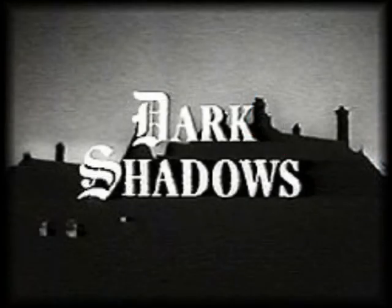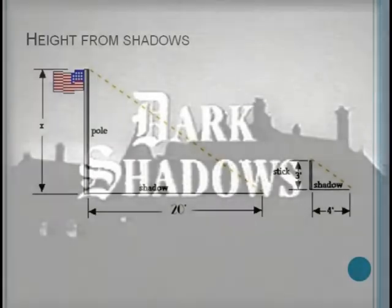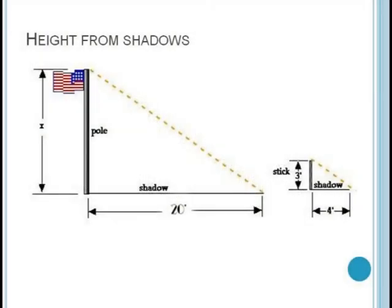Our final example is the ubiquitous shadow problem. In this case we wish to find the height of a flagpole. If we have a yardstick that's three feet tall, and it casts a shadow four feet long, then we have made a small triangle, which is similar to the one made by the flagpole and its shadow.